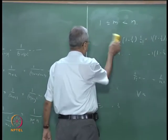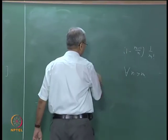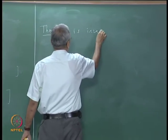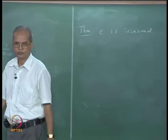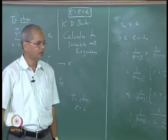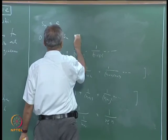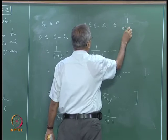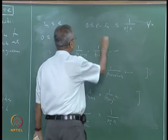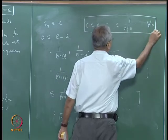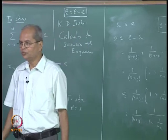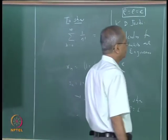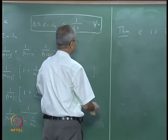Using this, we can also prove that e is irrational. We know 0 ≤ e − Sₙ ≤ 1/(n·n!), which implies 0 ≤ n!(e − Sₙ) ≤ 1/n for all n. The proof that e is irrational is quite different from the proof that √2 is irrational.